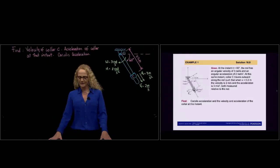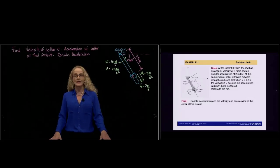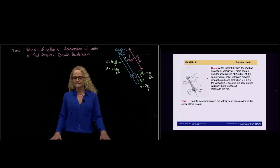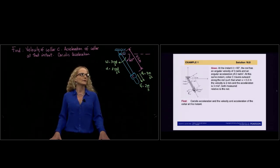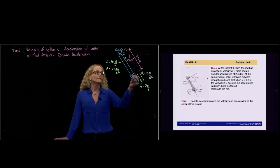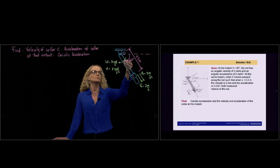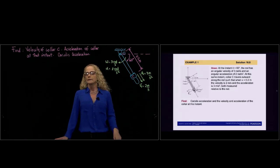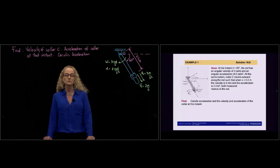Hi, now we are in example number one of section 16.8. Here we will learn how to calculate the velocity of a body that moves with a relative velocity and acceleration from another body. So we will use the whole equations of velocity and acceleration.